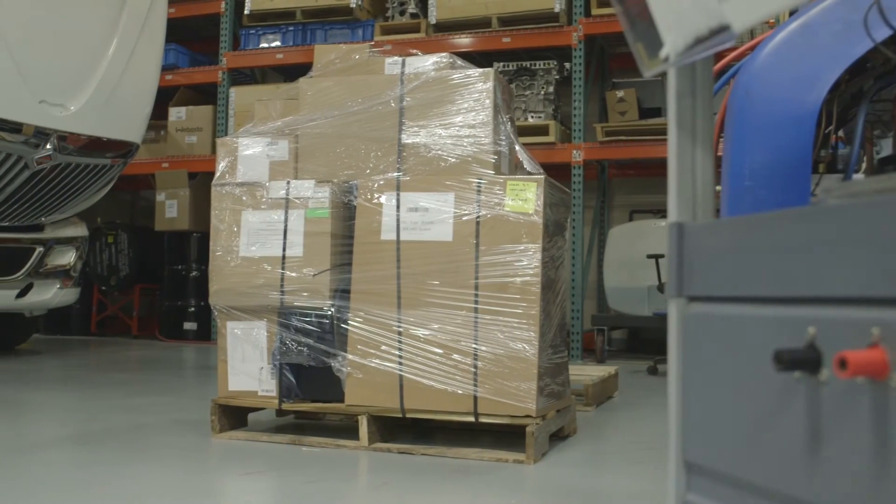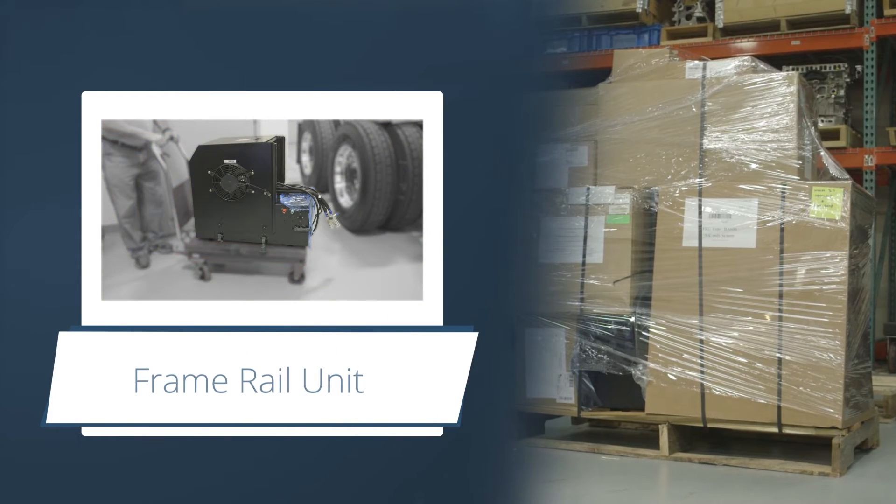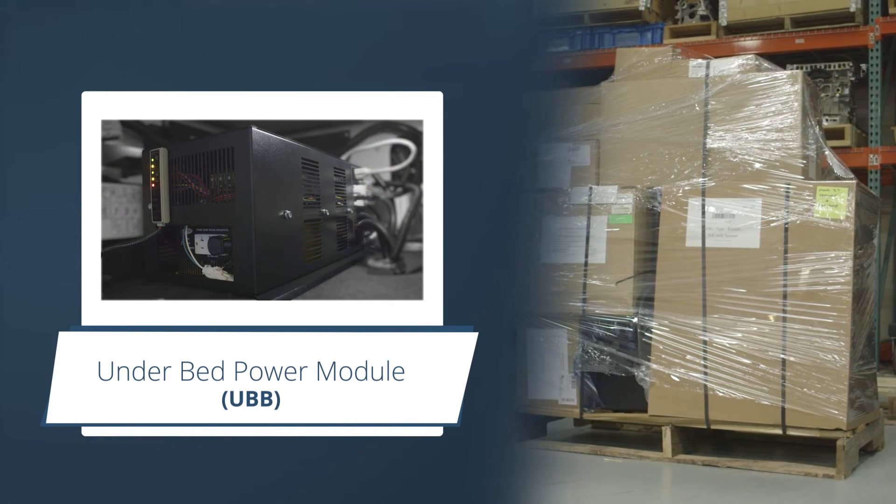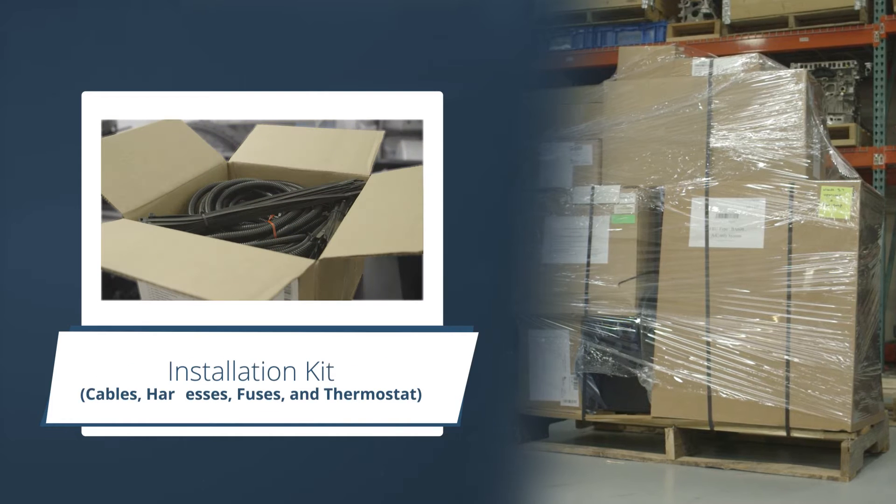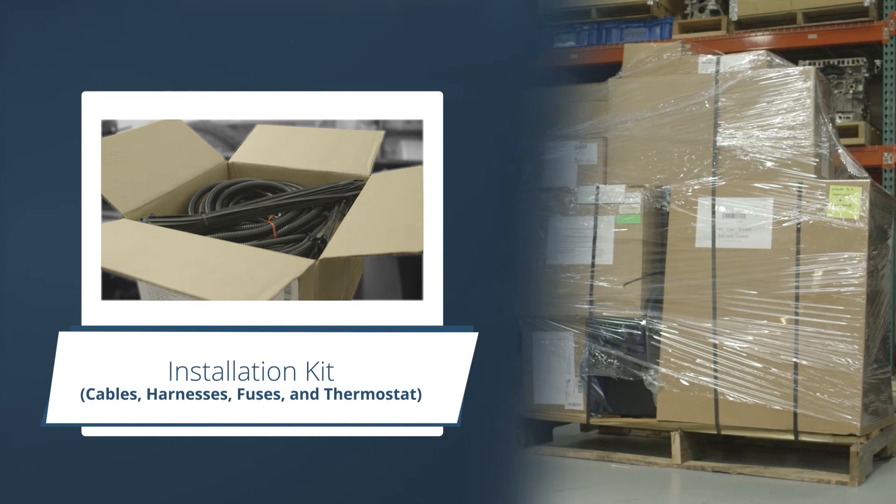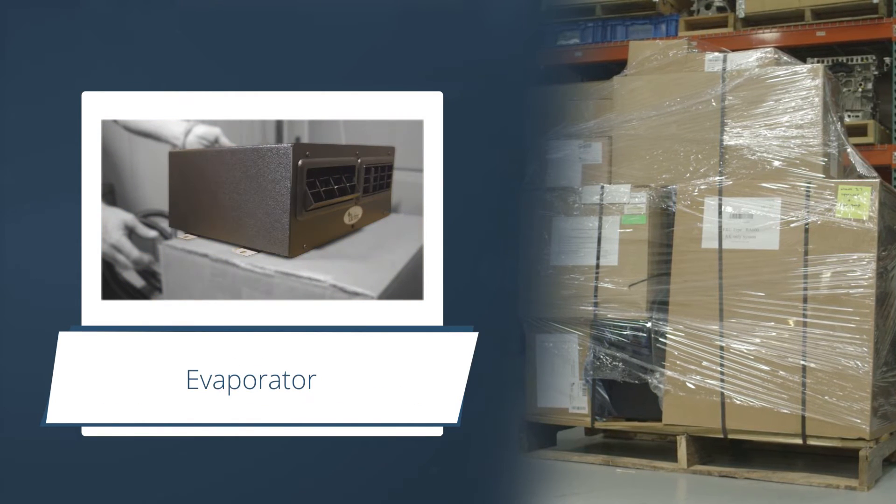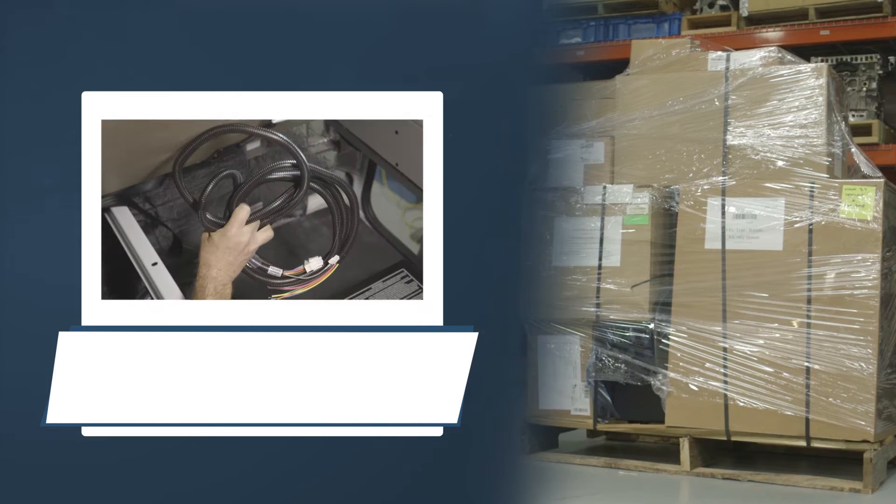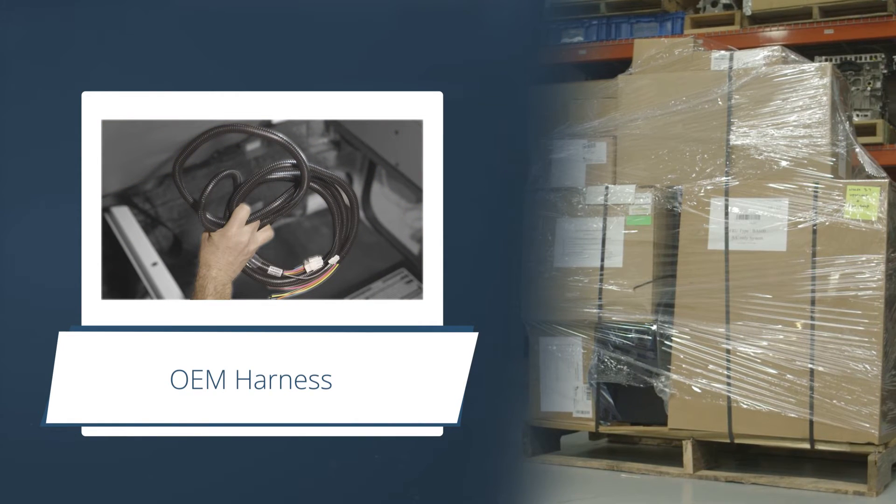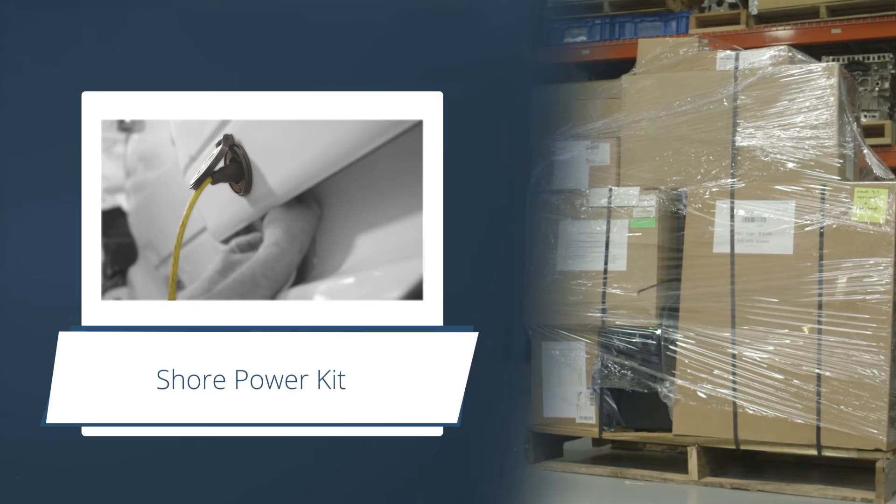The APU system will arrive on a pallet and will include individual boxes containing frame rail unit, under bed power module or UBB, installation kit with cables, harnesses, fuses, and thermostat, frame bracket, power socket, evaporator, OEM harness, shore power kit, and driver's packet.